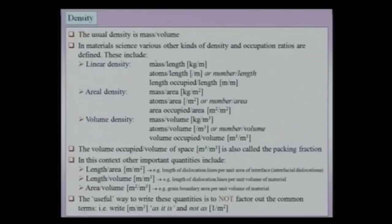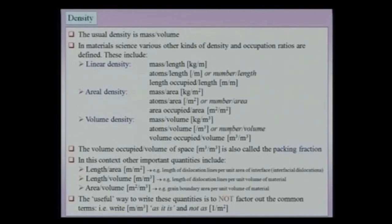For volume density, you can define mass per unit volume, number of atoms per unit volume (per m³), or volume occupied per unit volume. We have been dealing with the last definition, which is the concept of the packing fraction. I would write the units as m³ per m³ just to emphasize it is volume per unit volume — even though one can cancel units and say it is dimensionless.